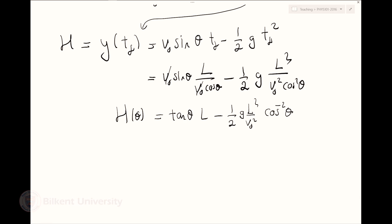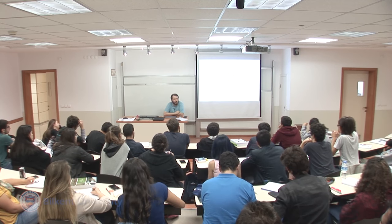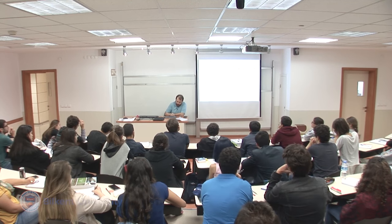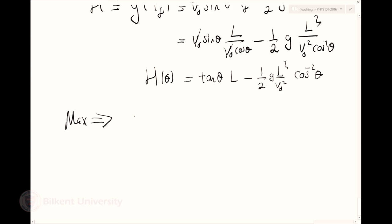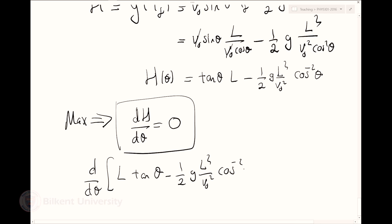Let's make sure I'm actually finding the maximum. To find the maximum, dh/dθ must equal zero. Let's take the derivative of h: d/dθ of l·tanθ minus one-half g l² over v0² times cos⁻²θ.